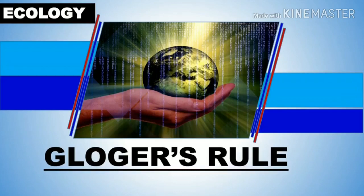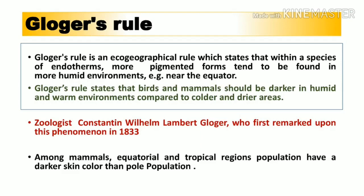Today we will be discussing Gloger's Rule. Before this, we covered Bergmann's Rule as well as Allen's Rules. Today's topic is Gloger's Rule. These rules come from ecology — in our ecosystem there are rules depending upon which we see different kinds of structures, extremities, body color, and body size.